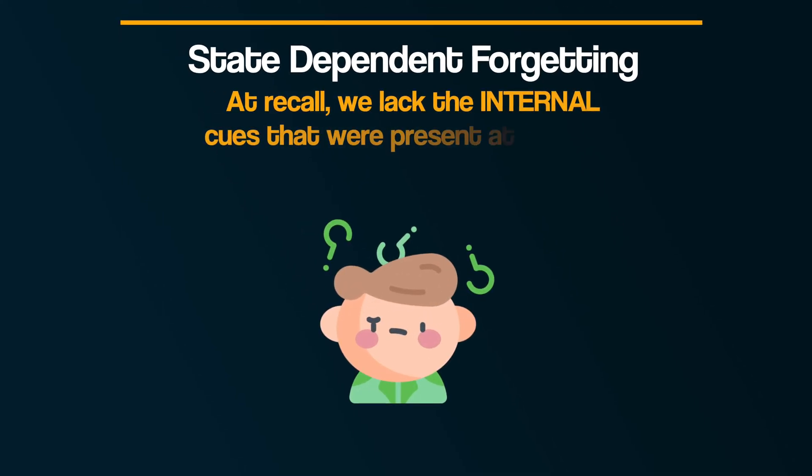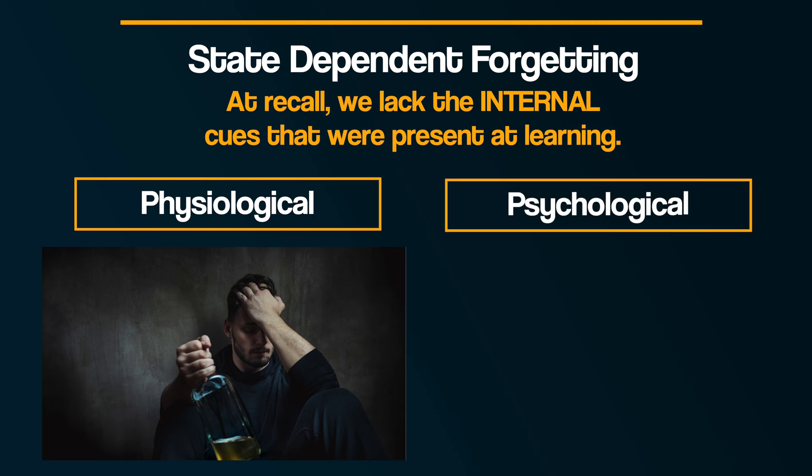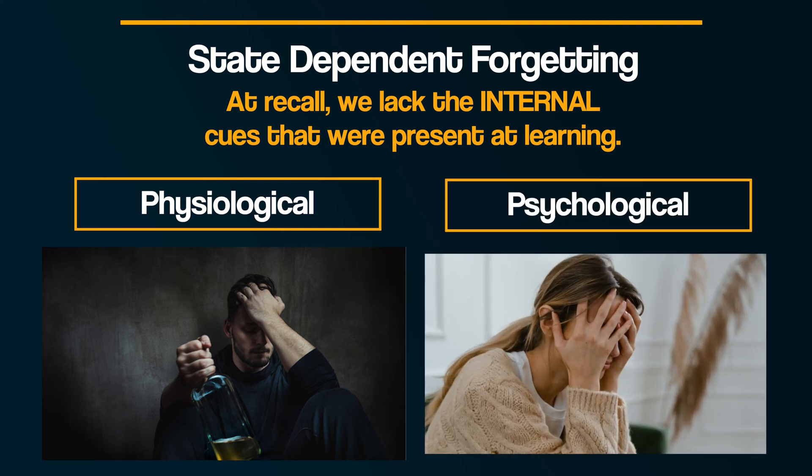Secondly, state-dependent forgetting. This focuses on the importance of internal cues — that is, cues that are inside of us. If we forget, it's because when we try to recall the memory we lack the internal cues that were present at learning. This might be physiological, like being under the influence of alcohol or drugs, or it might also be psychological in terms of our mood and emotions at the time the memory was formed. For example, sometimes people can forget memories because when they must recall the information — like in an exam — they are in a highly anxious, stressed, and potentially upset state. The problem is that when they were learning and encoding the information they weren't in that state; they were much more focused and emotionally calm. And so the internal cues are now absent. The memories are there — they haven't disappeared, even though you might feel like it has completely gone from your mind.